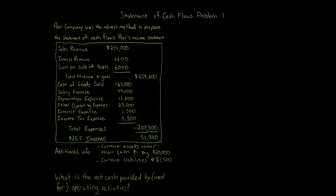Additional information is as follows: current assets other than cash increased by $20,000 and current liabilities decreased by $1,500. What is the net cash provided by or used for operating activities?